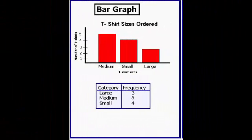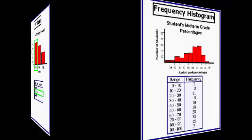So here I have an example of a bar graph, which is measuring the frequency of t-shirt sizes ordered. You can see that there are three different types of sizes: medium, small, and large. And then we've also got a frequency table below. Just by looking at this bar graph, as well as the frequency table, we can tell that the largest number of orders were placed for the medium-sized t-shirts.